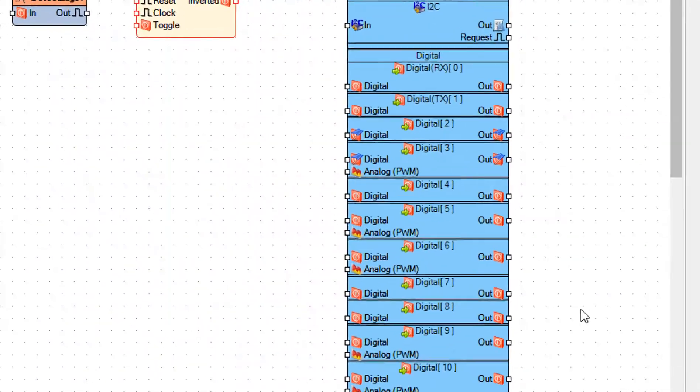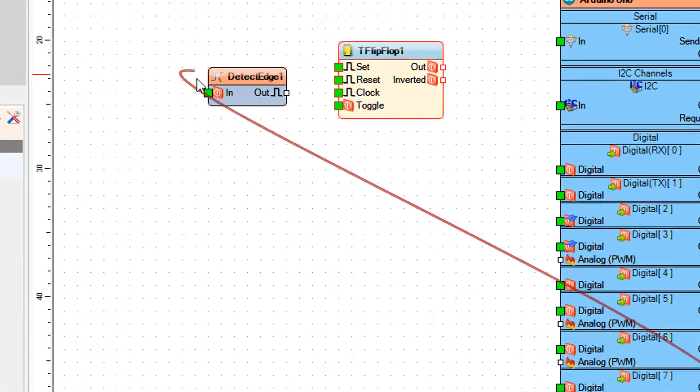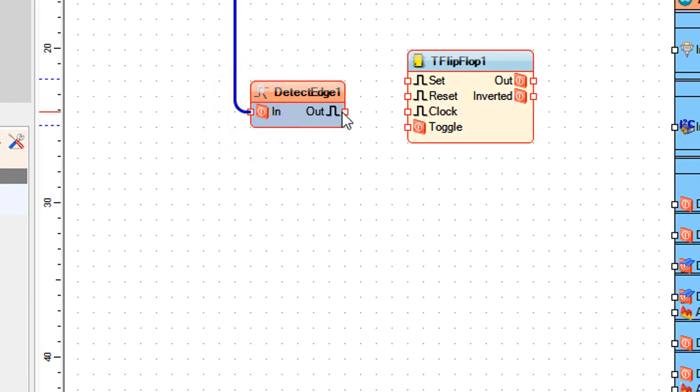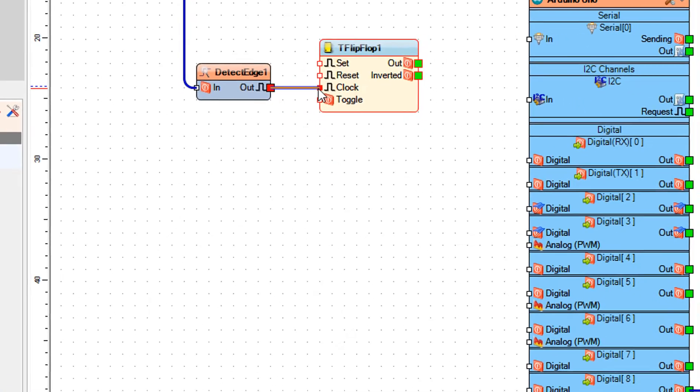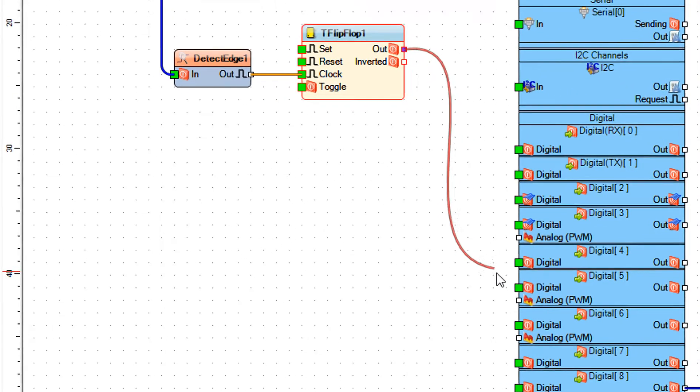Connect Arduino digital out pin 8 to detect edge 1 pin in. Connect detect edge 1 pin out to t flip-flop 1 pin clock. Connect t flip-flop 1 pin out to Arduino digital pin 7.